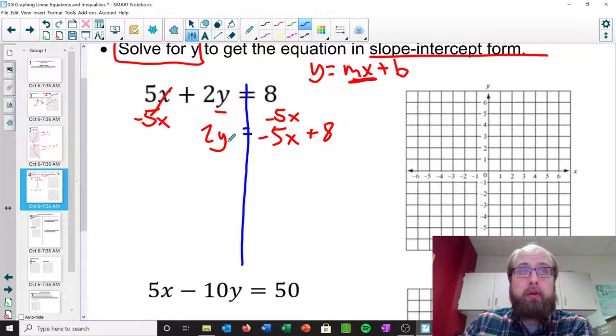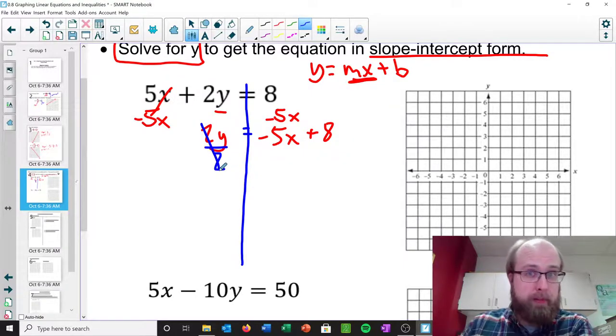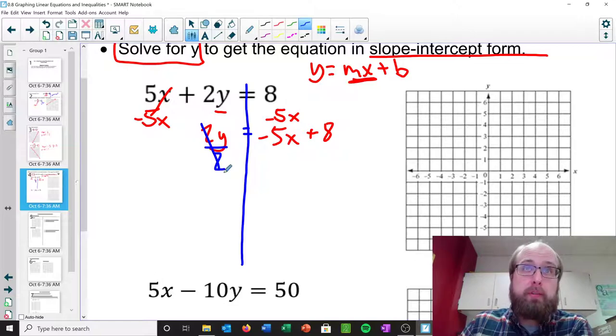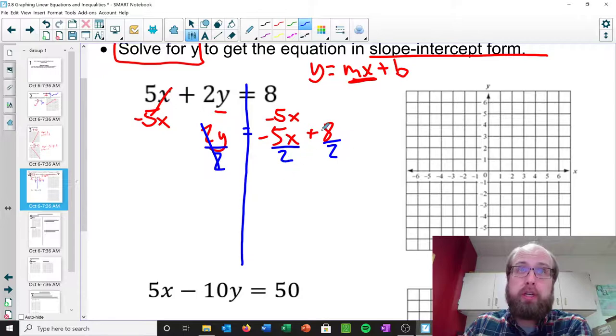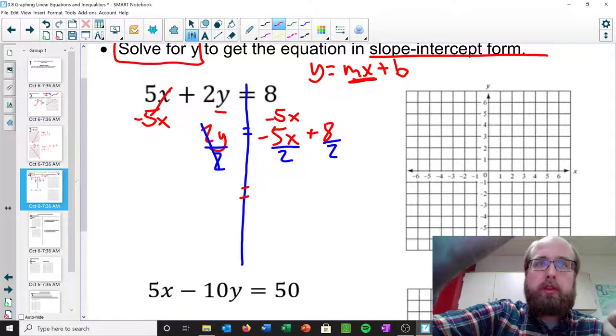All right. From there, we just have to get y alone. So we have 2 times y here. We need to divide both sides by 2. And then this is where the number one mistake occurs on these types of problems. When you divide by 2, you need to divide everything by 2. So a lot of times students will just divide the 5x, or they'll just divide the 8. But you need to do both of them. So I'll take the 5x divided by 2, and I'll take the 8 divided by 2.